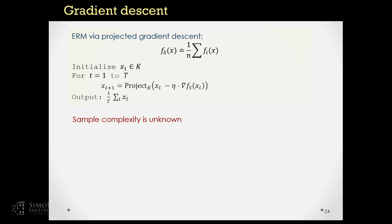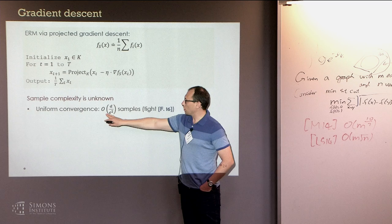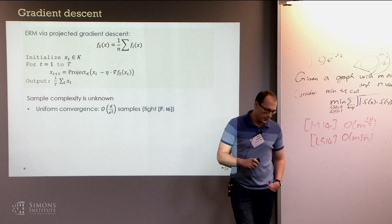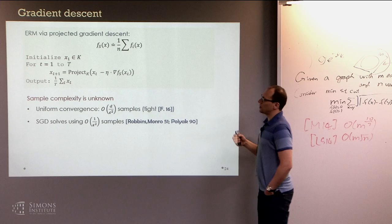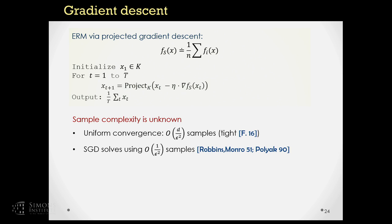Using standard uniform convergence machinery, D/epsilon samples suffice, and it turns out this is actually necessary — uniform convergence requires D/epsilon samples and this lower bound was proved recently. At the same time, if you use stochastic gradient descent for the same problem, you obtain a solution that generalizes using just 1/epsilon² samples without any dependence on dimension D — due to a classical result attributed to Polyak.